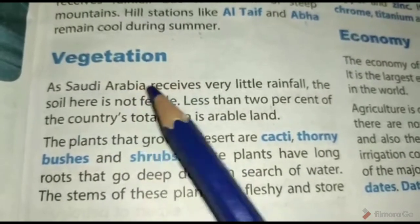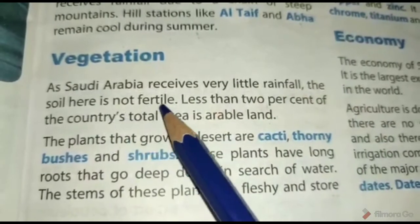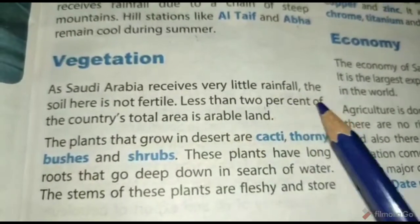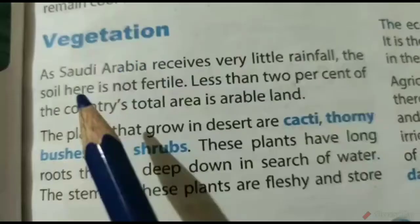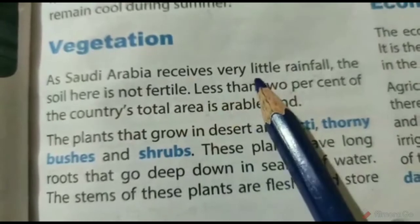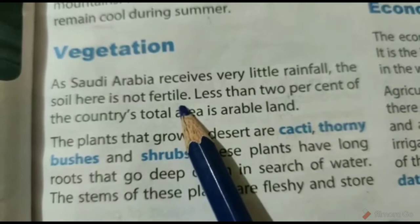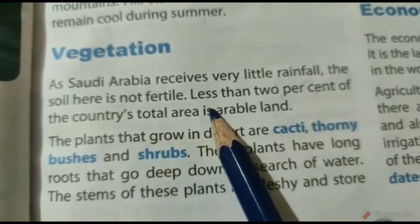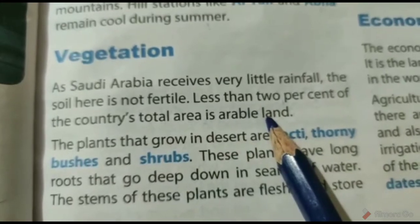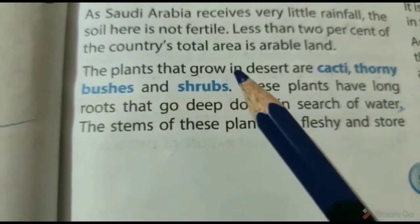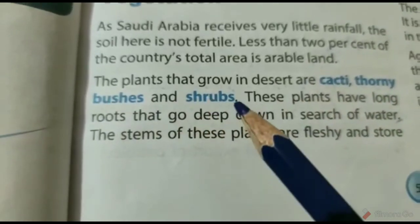As Saudi Arabia receives very little rainfall, the soil here is not fertile. Less than 2% of the country's total area is arable land. जैसे कि Saudi Arabia में बहुत कम बारिश होती है इसलिए यहाँ की मिट्टी उपजाऊ नहीं है। देश के कुल क्षेत्रफल का 2% से भी कम कृषि योग्य भूमि है। The plants that grow in deserts are cacti, thorny bushes and shrubs.